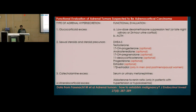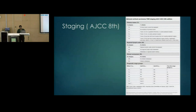Regarding functional evaluation: once an adrenocortical carcinoma is suspected on imaging, functional workup should include glucocorticoid axis, sex steroid and steroid precursor axis, catecholamine axis, and mineralocorticoid axis. This is done by low-dose dexamethasone suppression test for cortisol, ACTH, testosterone and estradiol for sex steroids, serum and urinary metanephrines to rule out pheochromocytoma, and aldosterone-to-renin ratio in patients with hypertension or hypokalemia.